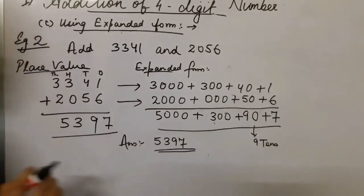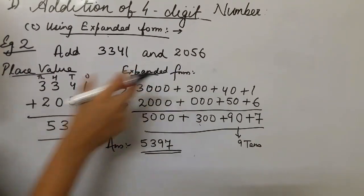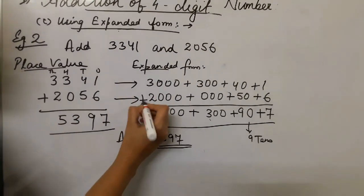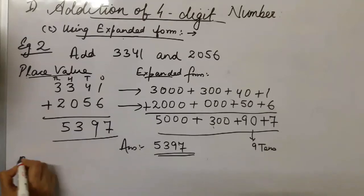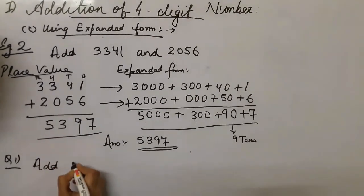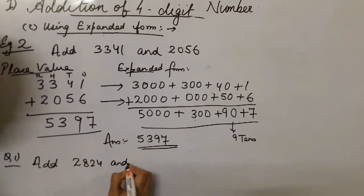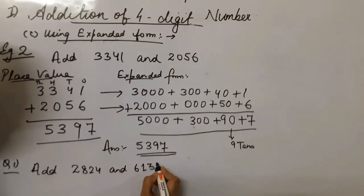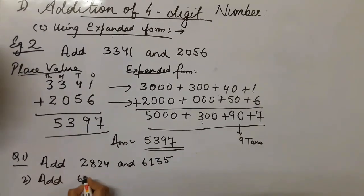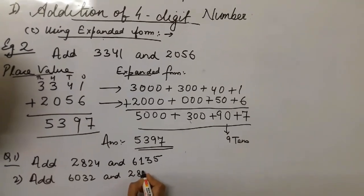When doing expanded form, you need to write the place value and then the expanded form for each number. Each number should be expanded, and thereafter you add. Here are some questions: add 2,824 and 6,135. Second question: add 6,032 and 2,836.